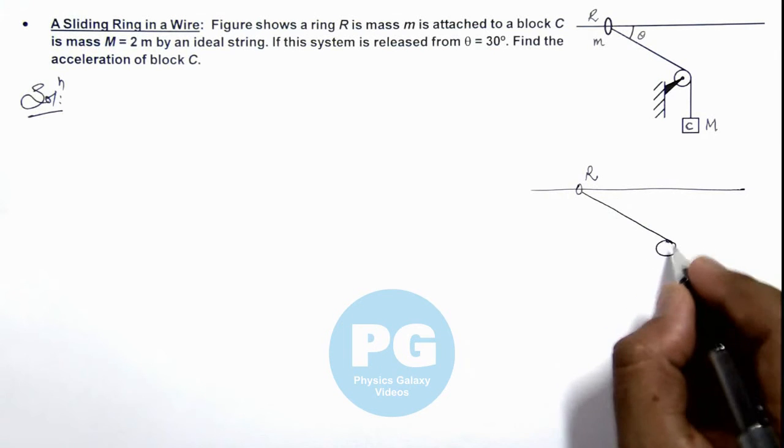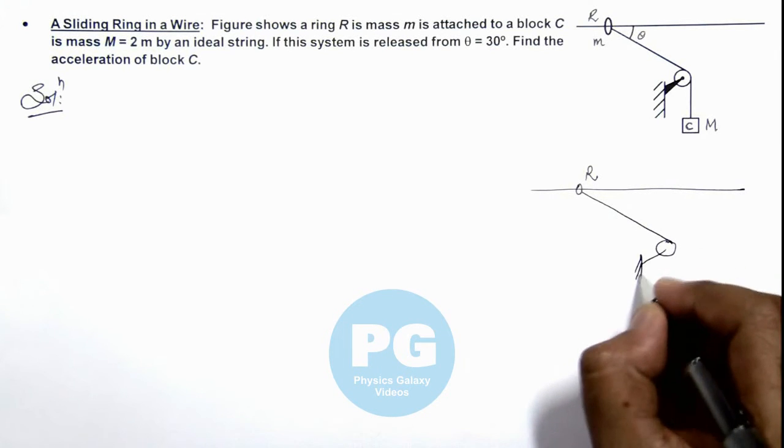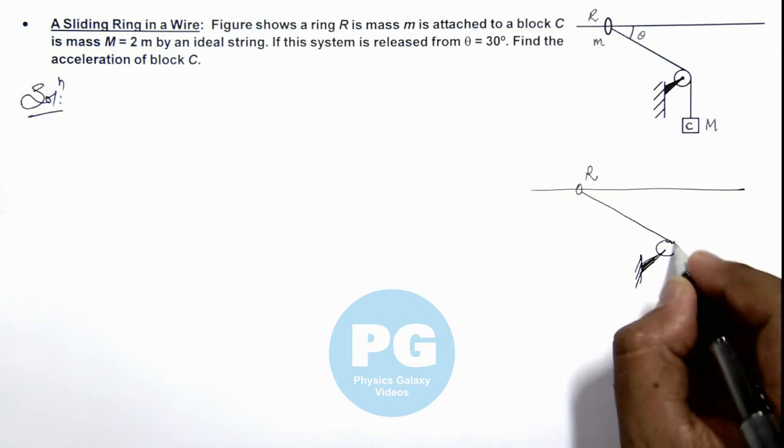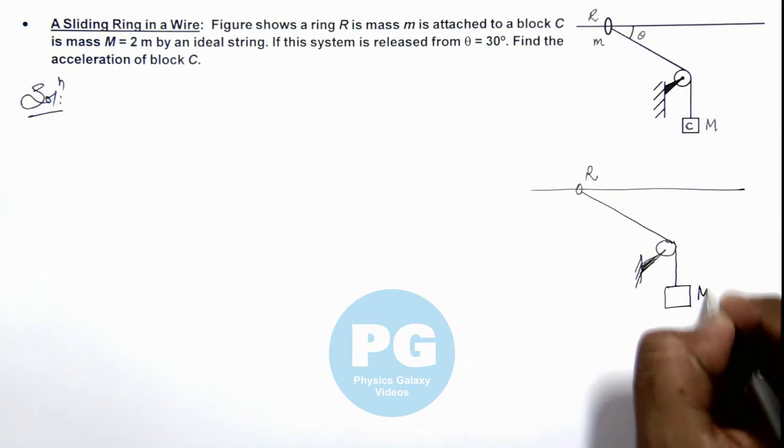And here this is the pulley which is connected to a rigid support and on which a block C of mass M is hanging.